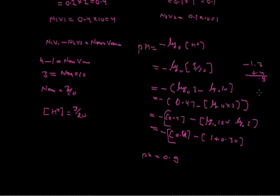What we discussed today: if the examiner asks for pH of a mixture and gives a single strong acid or base, use negative log of concentration directly. If given a mixture, check if all are acids — use N1V1 plus N2V2 equals Nmix times Vmix. If all are bases, use the same additive formula. If there is one acid and one base, calculate gram equivalents of each, subtract the smaller from the larger, find Nmix, and determine pH or pOH accordingly. Also, if the examiner gives concentrations in molarity, convert to normality first using normality equals molarity times valency factor, then solve. Thank you.